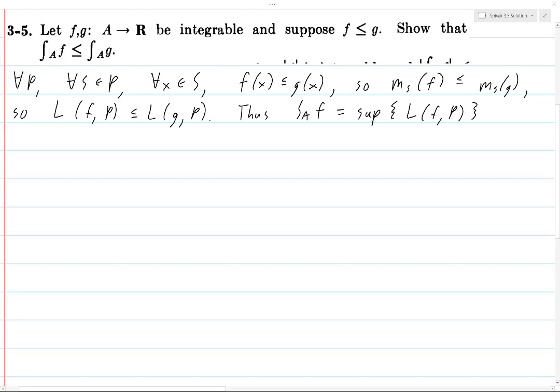Now we know L of F,P is less than or equal to L of G,P. And so we can again take the supremum over all P and get supremum of L of F,P is less than or equal to the supremum of L of G,P.